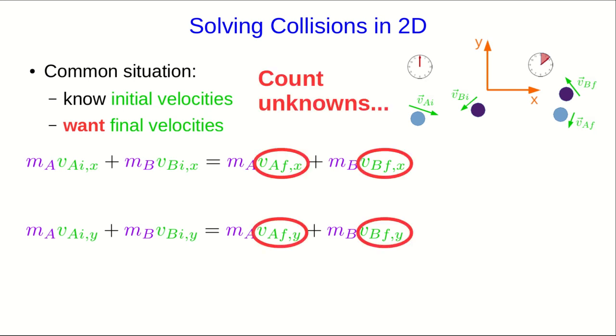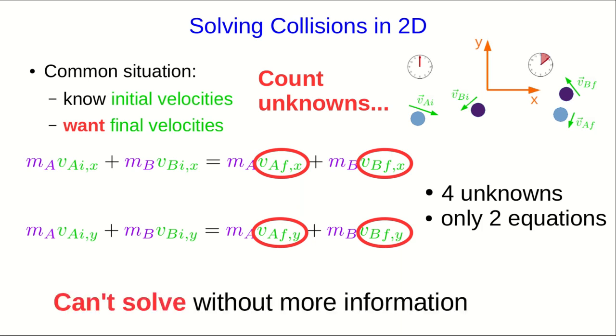Well, look, we have four unknowns, because each velocity has two unknown components. And so there are four unknowns, but only two equations. And there's actually nothing more we can do. We can't solve this without more information, because we don't have enough equations to deal with those unknowns.